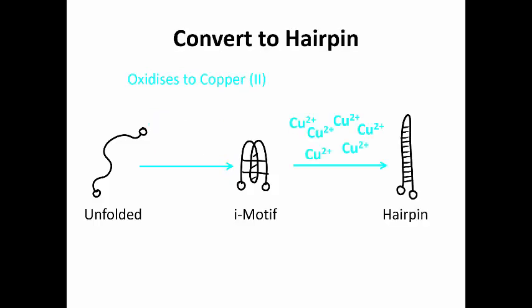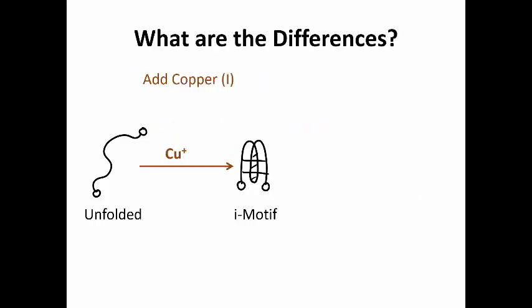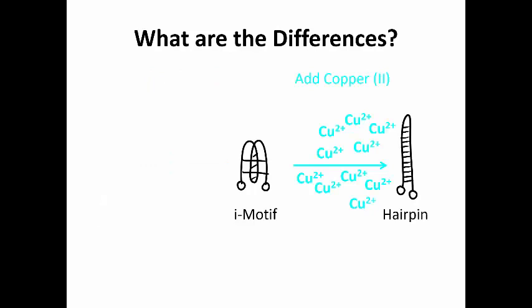This converts the i-motif into a hairpin, a completely different structure. We can make this change by just adding oxygen. Interestingly, we found that you need almost 10 times less copper 1 to form i-motif than you need copper 2 to make hairpin.